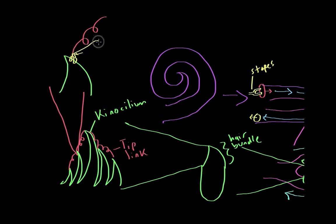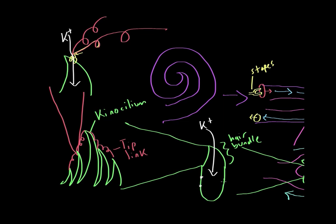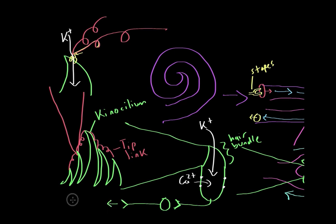As the kinocilium gets stretched, it opens up the potassium channel gate. When the gate opens, potassium from outside flows into the cell. There are also calcium channels that get activated when potassium enters, so calcium flows in as well. The influx of potassium and calcium causes the cell to fire an action potential, stimulating a spiral ganglion cell, which then activates a cell in the auditory nerve that sends the signal to the brain.